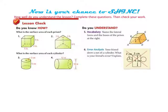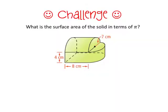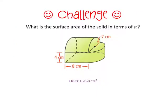Now's your chance to see how well you understand the lesson. Pause the video and do the lesson check. Don't forget to check your answers on the next slide. If you have any questions about the lesson check, be sure to ask me in class. Now that you know all about surface area of prisms and cylinders, go ahead and do the challenge. Take another minute to reread the learning goal and scale — have you climbed any higher on the scale than where you were at the beginning of the lesson?